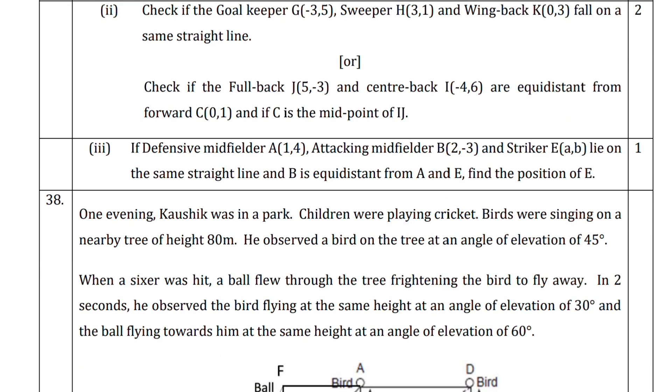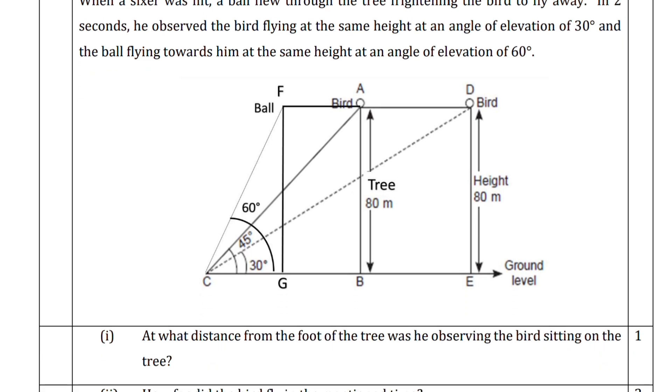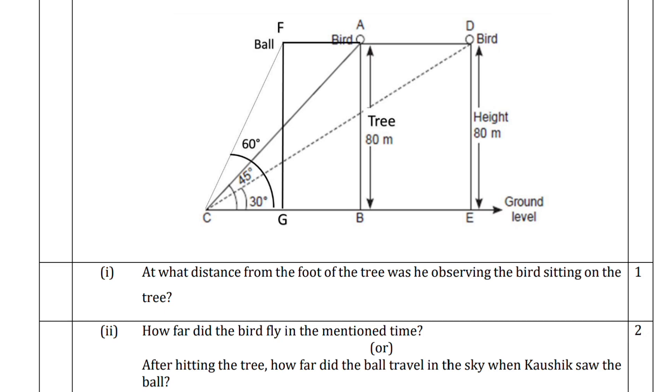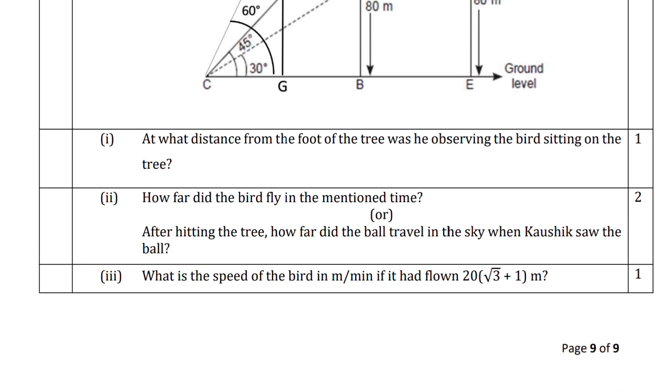If it's clear, see questions 31, 32, and 33. In question 31, one evening Kaushik was in the park. You can see this graph here with 30 degree and 45 degree angles. Till question 33, according to this you have to give the answer.